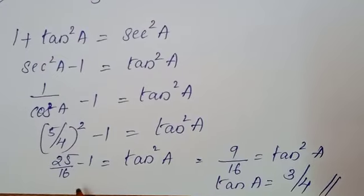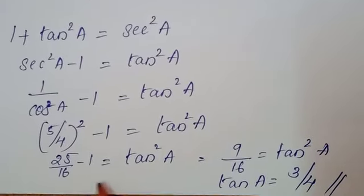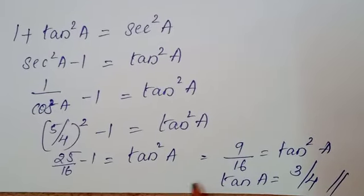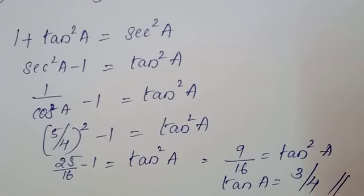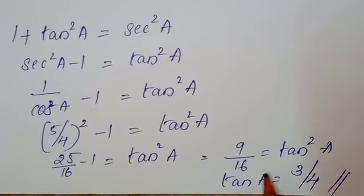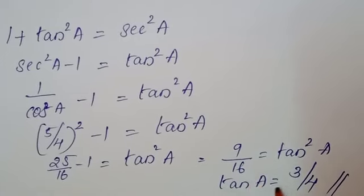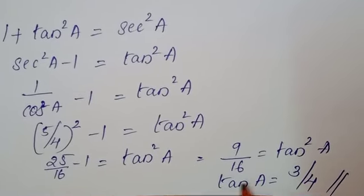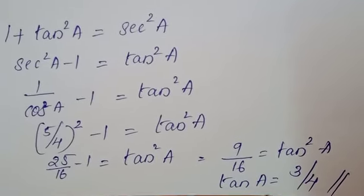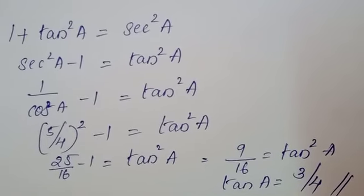I skip one step over here, it will come like that, 5 by 4 square minus 1 equals tan² A. Then take LCM and all, after LCM you will get 9 by 16 equals tan² A. Then tan A equals, this is the square root of 9 by 16, root 9 equals 3, root 16 equals 4. The final answer is 3 by 4.